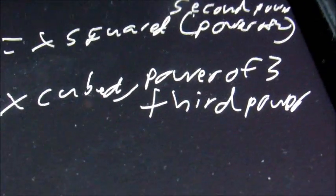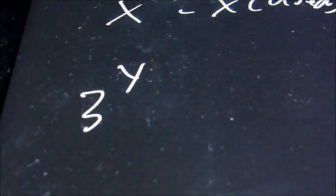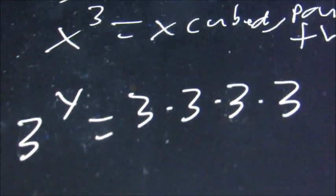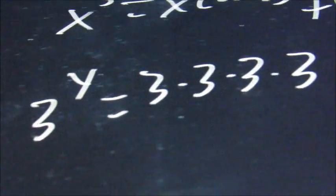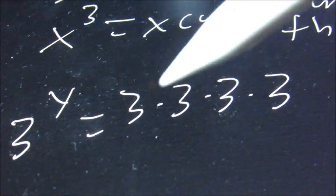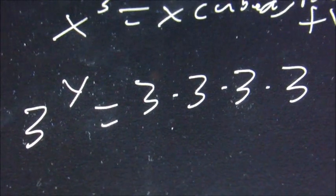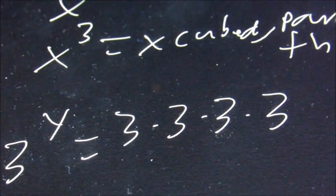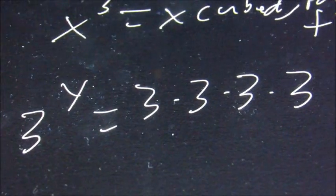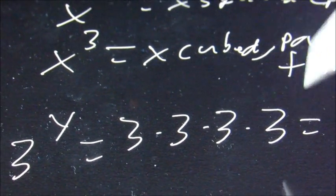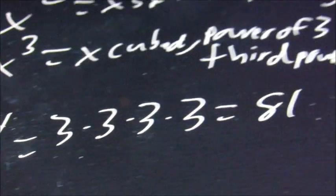Let's say we have three raised to the four. That means three times three times three times three — you're not saying three times four. It's three multiplied by itself four times. Whatever the exponent is, that's how many times you multiply the base number by itself. So three times three times three times three equals 81.